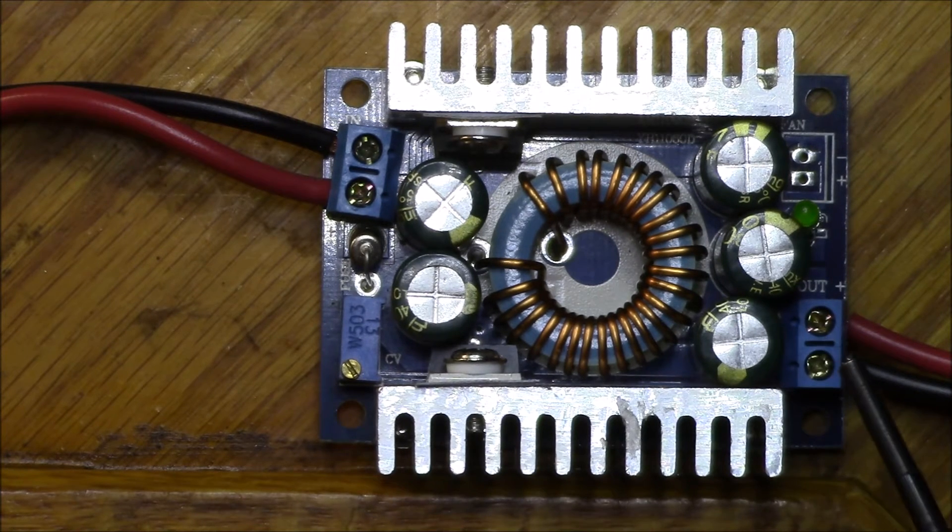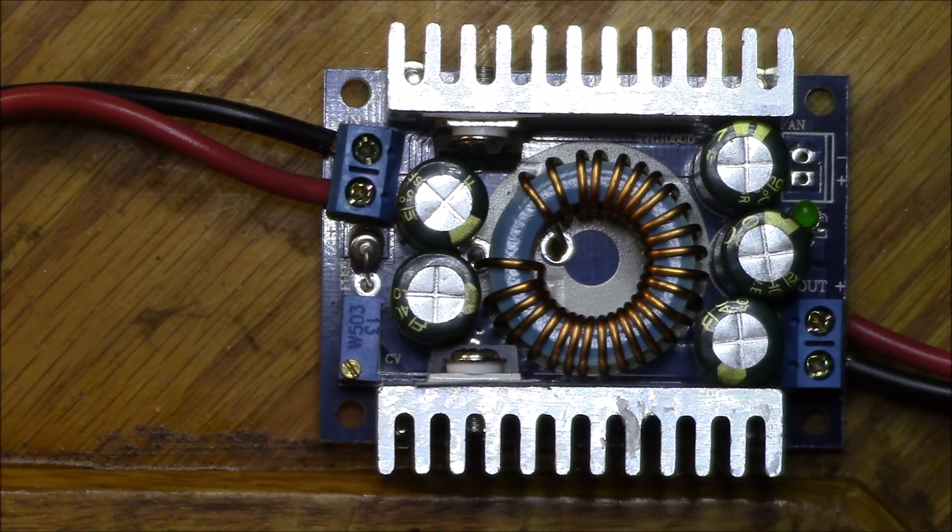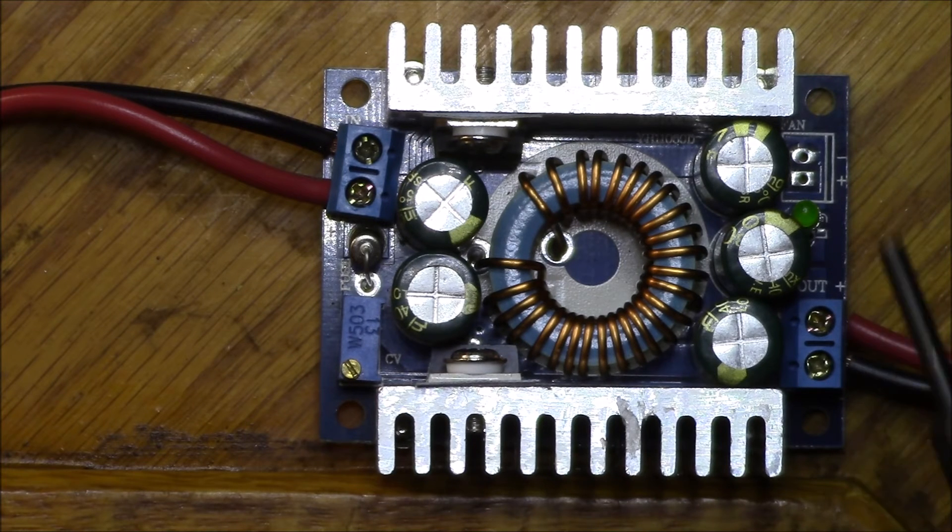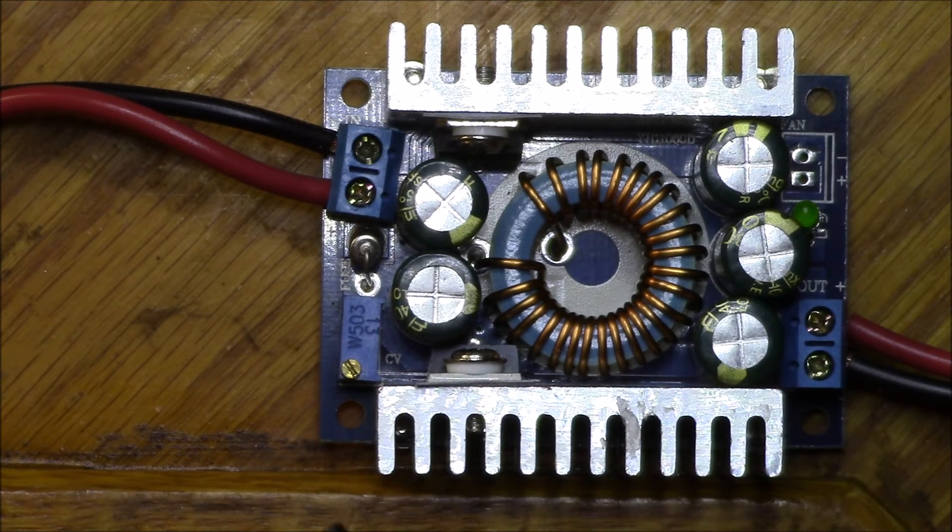First off, let's take a quick look at the DROC buck converter itself. It has a compact size measuring 60 millimeters long, 43 millimeters wide and 22 millimeters tall with four 3 millimeter mounting screw holes.